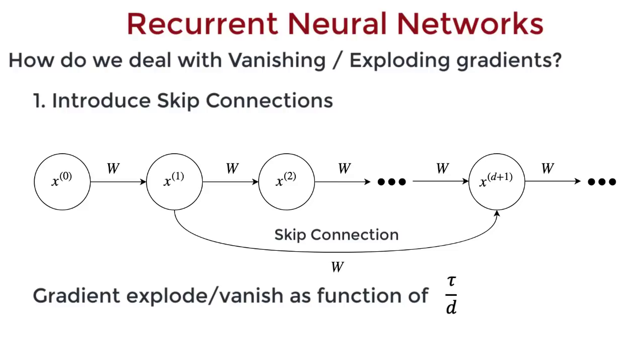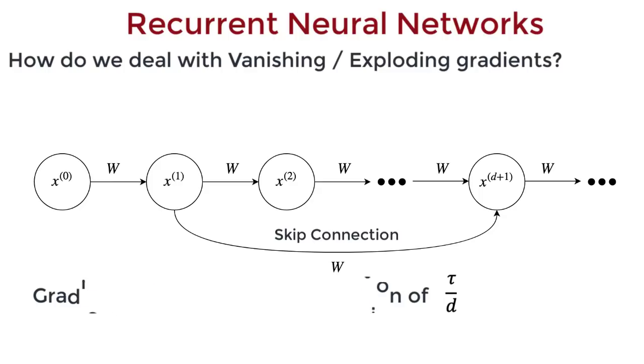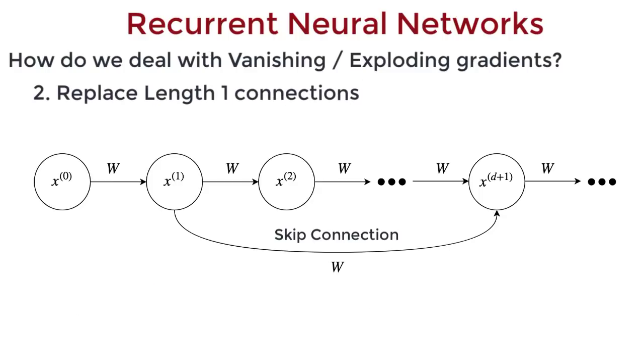The second thing we can do is actively remove connections of length 1 and replace them with longer connections. This forces the network to learn along this modified path.